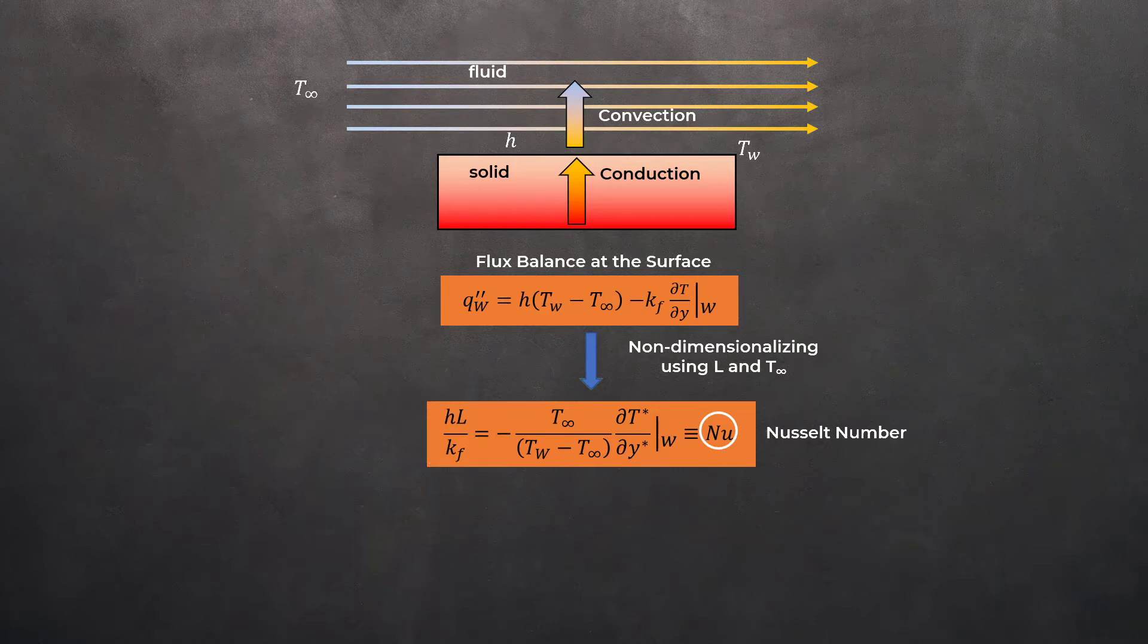If the heat transfer coefficient used to define the Nusselt number is local, then the Nusselt number is also local. To obtain the average Nusselt number, one can instead use the average heat transfer coefficient.